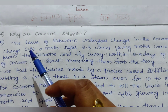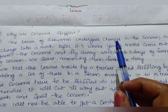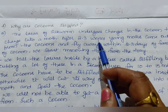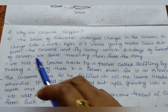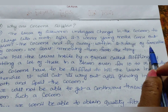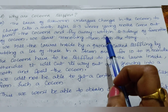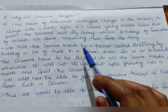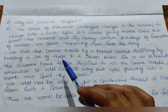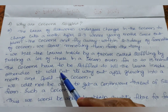Fourth question: Why are cocoons stifled? The larva of silkworm undergoes changes in the cocoon to change into a moth. After 2–3 weeks, young moths come out of the cocoons and fly away. Within 2–3 days of formation of the cocoon, we start removing them from the tray. We kill the larva inside by a process called stifling — by putting them in a steam oven for 10–15 minutes.